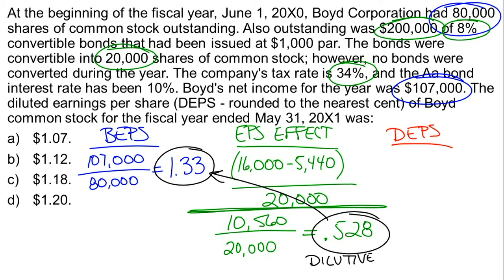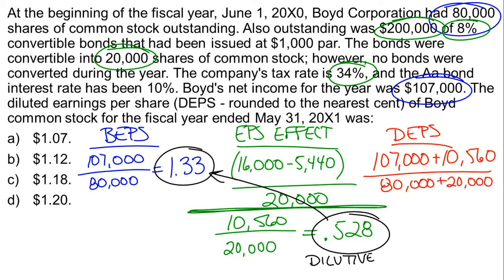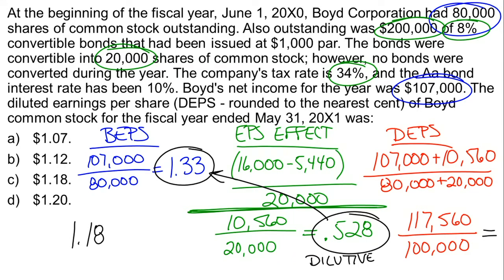We add $107,000 plus $10,560 — the after-tax interest savings if the bonds had been converted. For the denominator, we take the original 80,000 shares plus the 20,000 shares the convertible bonds convert into, giving 100,000 shares. That gives us $117,560 divided by 100,000 shares. Rounded to the nearest penny, that's $1.18 — technically $1.1756, which rounds up to $1.18.